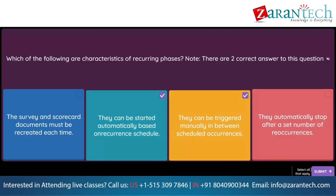Question. For SAP Ariba Supplier Information and Performance Management, Classic Architecture, which SAP Ariba modules can provide data for the supplier 360-degree report? Note, there are three correct answers. Option 1: SAP Ariba Supply Chain. Option 2: SAP Ariba Contracts. Option 3: SAP Ariba Discovery. Option 4: SAP Ariba Spend Analysis. Option 5: SAP Ariba Sourcing.